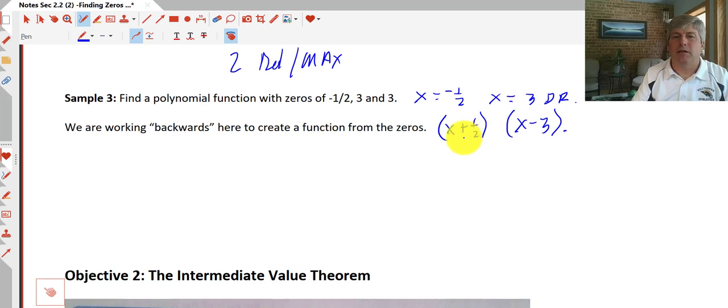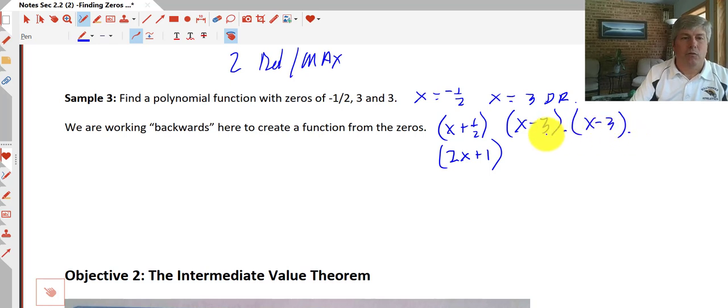Now sometimes it can be a little cumbersome to work with fractions. So I'm going to make x plus one half into two x plus one. So these are our factors. Now x minus three is a double root. So we have two factors of x minus three. So our function working backwards since we know what our factors are from our x intercepts is 2x plus one and (x minus 3) squared.